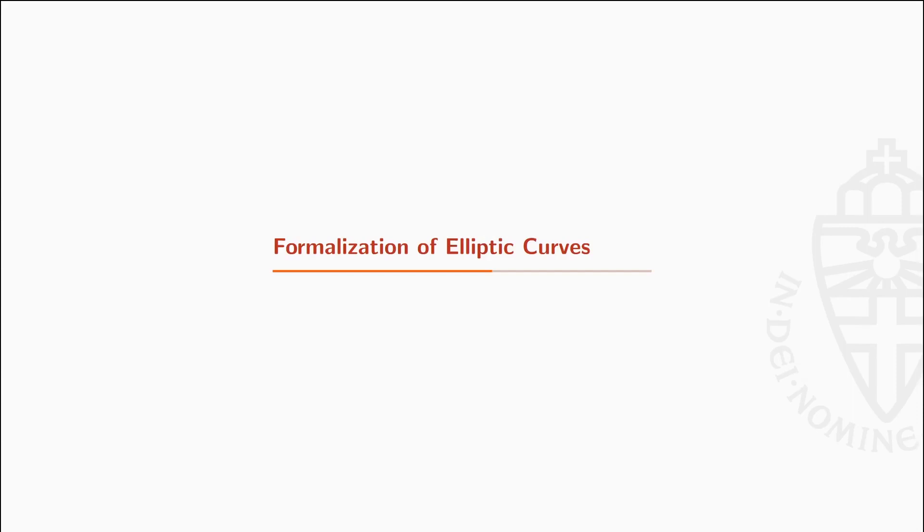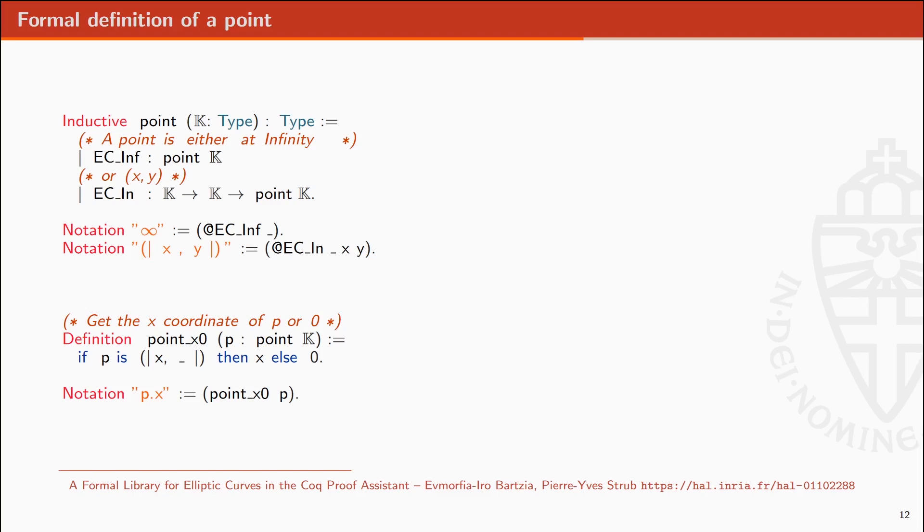Formalization of elliptic curves. A point on elliptic curves is seen as either the point at infinity or as a pair of coordinates. As X25519 is an X-coordinate-only protocol, we define a function which returns the X-coordinate for a given point.